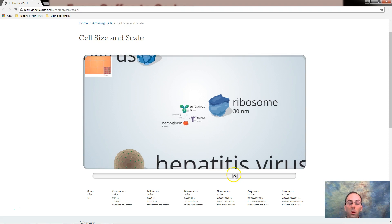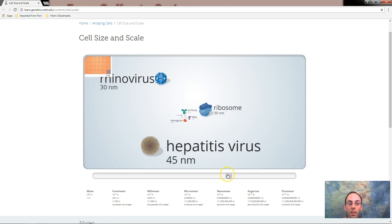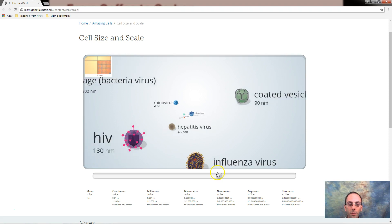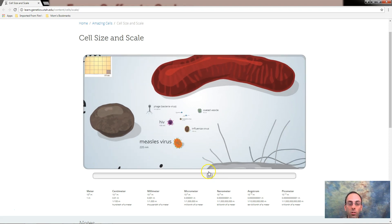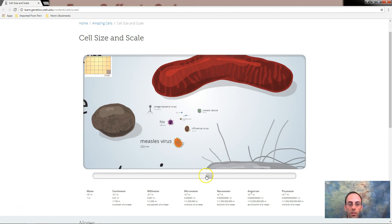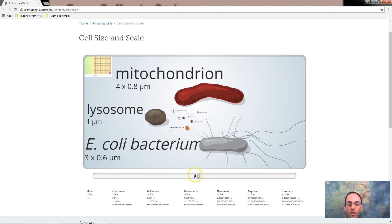This is our ribosome. We'll learn about those when we do organelles. Viruses. Again there's different types of viruses. Look at this giant thing over here. Well that is simply just a mitochondria. Lysosome.